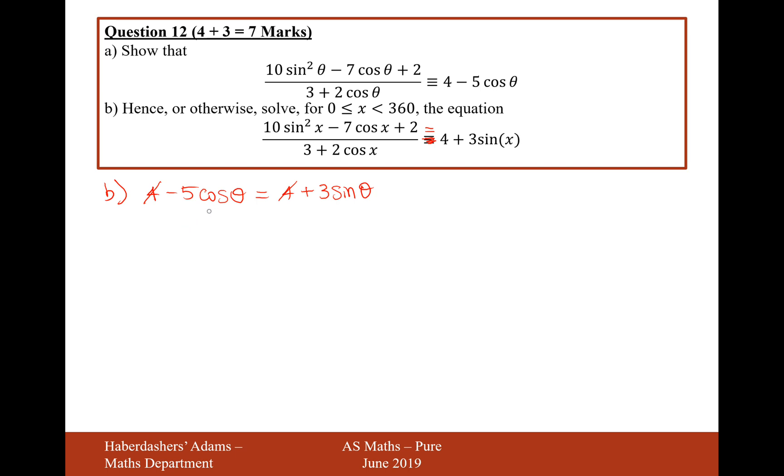So now it's going to be minus 5 cos theta equals 3 sin theta. Now, it's a sin and a cos, so I'm going to make a tan out of this. So if I divide by cos theta first, that's going to give me minus 5 equals 3 tan theta, because sin divided by cos is tan, then divide by 3, so it would be minus 5 over 3 equals tan theta.